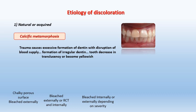Next is calcific metamorphosis, another cause of discoloration that happens due to trauma. Trauma causes excessive formation of irregular or irregular secondary dentine, as trauma causes destruction of the odontoblasts with destruction of the blood supply. This leads to the formation of irregular dentine and the tooth decreases in translucency or becomes yellowish and darker in color.